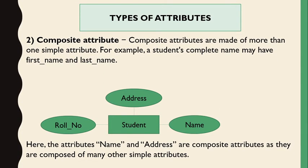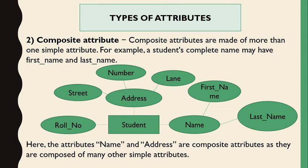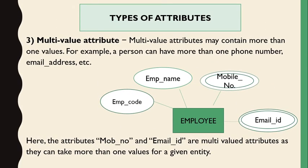The second type is composite attributes. Composite attributes are made of more than one simple attribute — attributes formed by combining simple attributes. For example, address is formed by combining street number, lane, and so on. Similarly, the name attribute is formed by combining first name and last name. So address and name are examples of composite attributes.